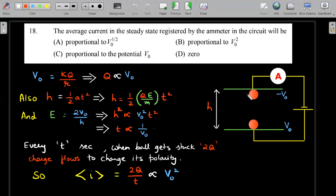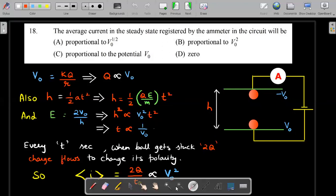So every T seconds when the ball gets stuck to the other plate, remember from being a +Q charge, it should actually acquire a -Q charge and vice versa. Which means the amount of charge that flows into the ball, obviously via the wire that you have here, should be equal to 2Q. And that value of the charge that flows should be equivalent to the average current that is flowing during the time duration T. So the value of the average current should be 2Q/T. And that should be proportional to, you would see Q is proportional to V₀, T is proportional to 1/V₀. So the value of the average current should be V₀².